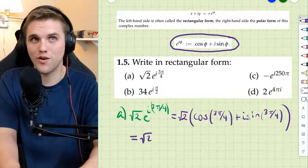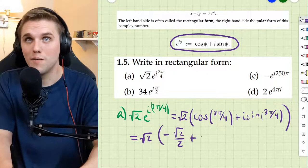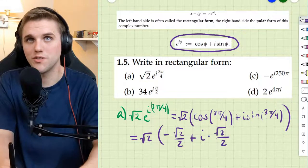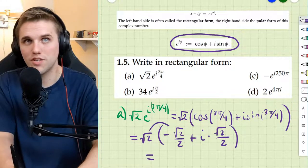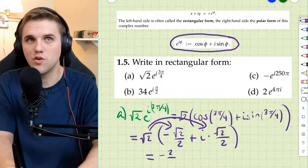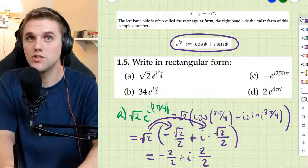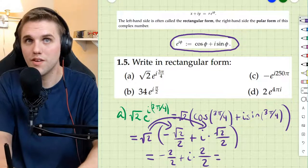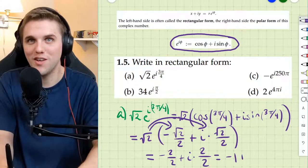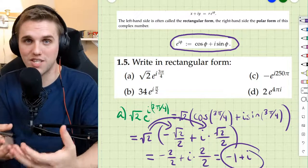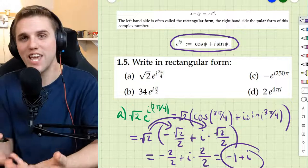So this is the square root of 2 times negative square root of 2 over 2 plus i times the square root of 2 over 2. And this can be further simplified with the distributive property. You get negative 2 over 2 plus i times 2 over 2, which is negative 1 plus i. And voila, we have our complex number represented in rectangular form.